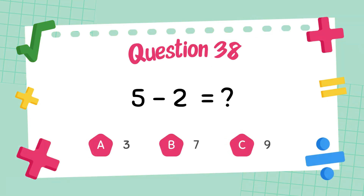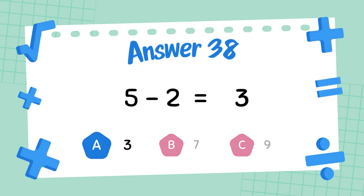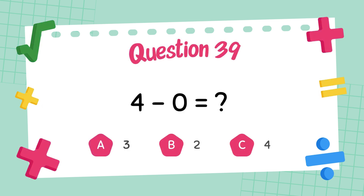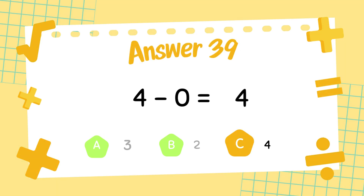What is 5 minus 2? The answer is 3. What is 4 minus 0? The answer is 4.